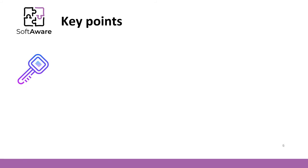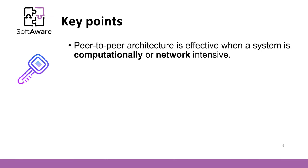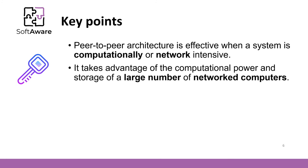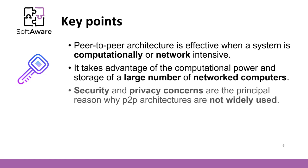When to use this architecture? First, when a system is computational or network-intensive and it is possible to separate the processing required into a large number of independent computations, taking advantage of the computational power and storage of many networked computers. Second, when a system primarily involves the exchange of information between individual computers and there is no need for this information to be centrally stored or managed.